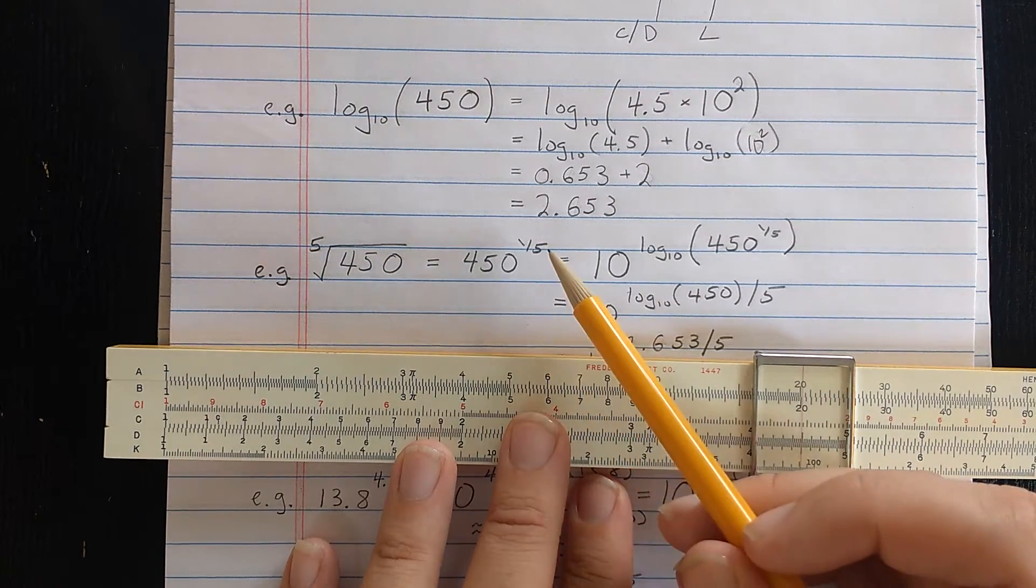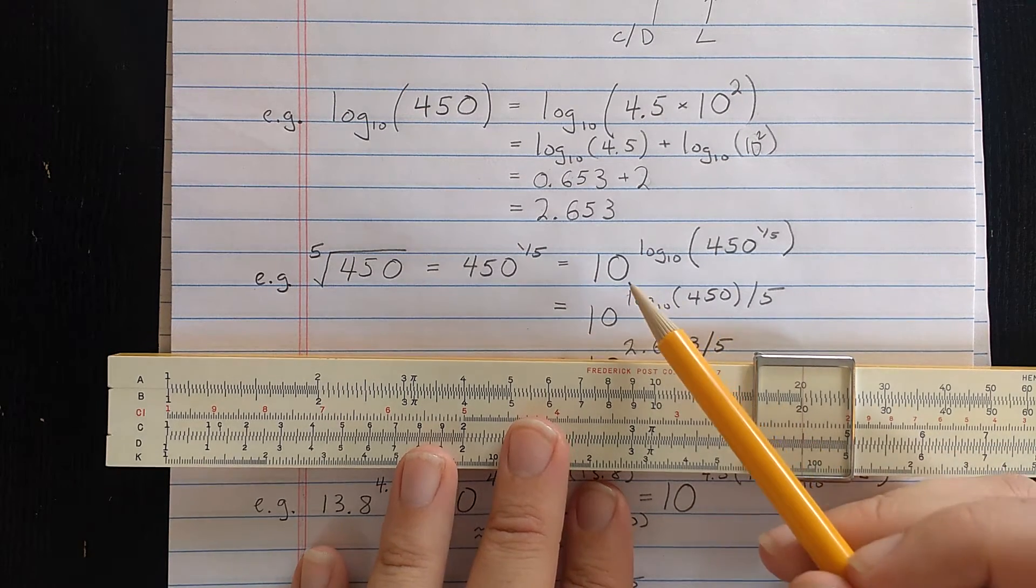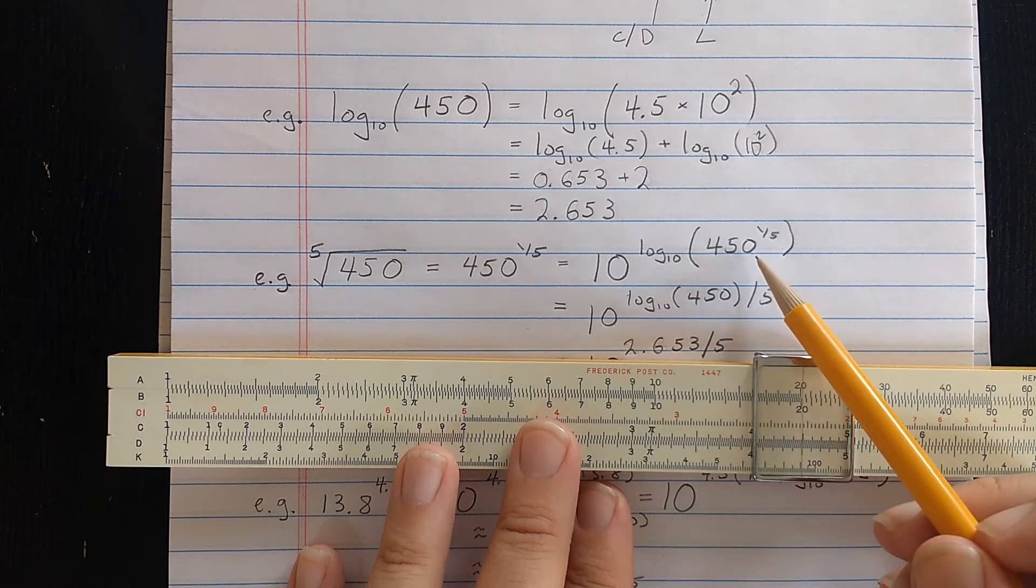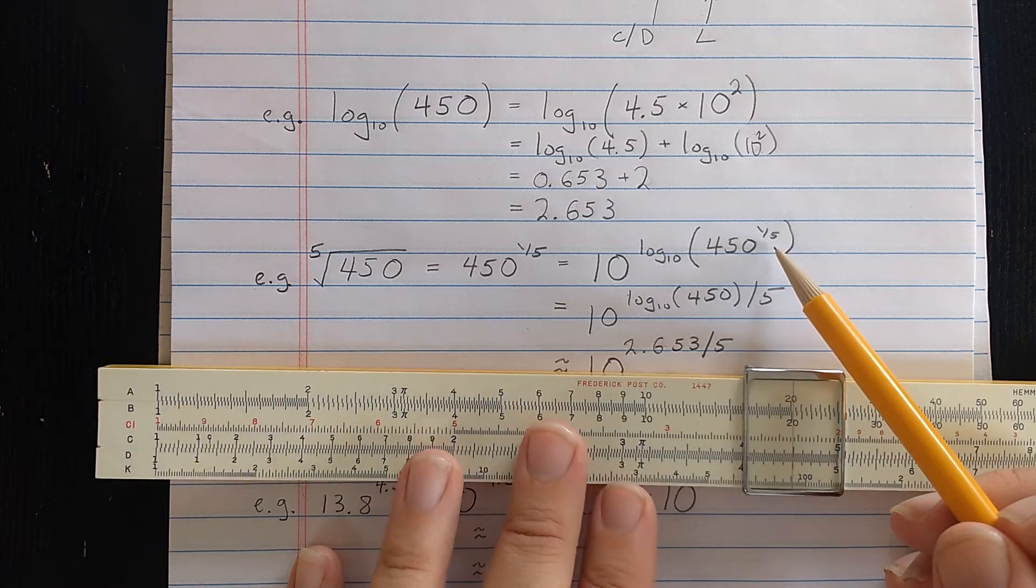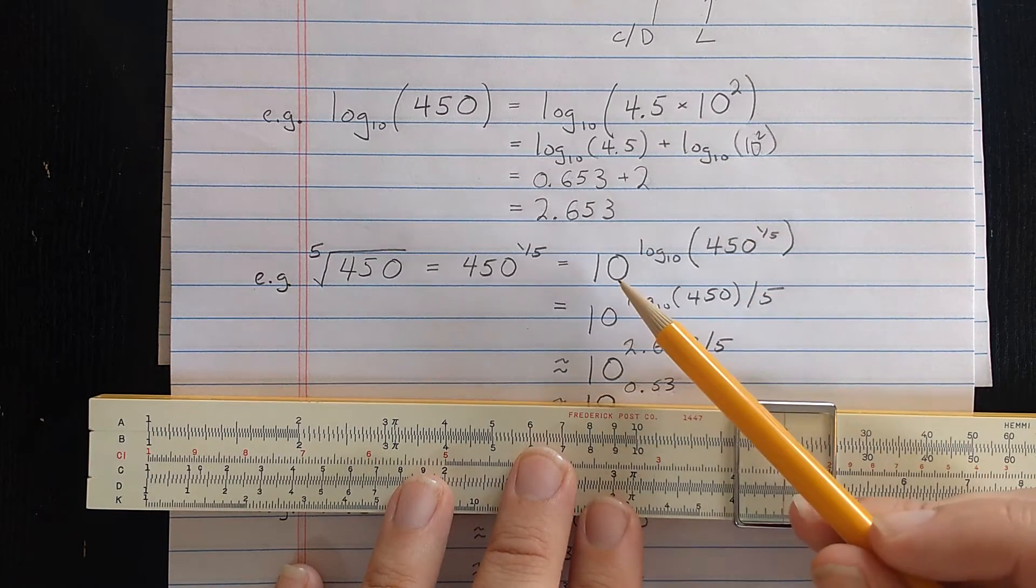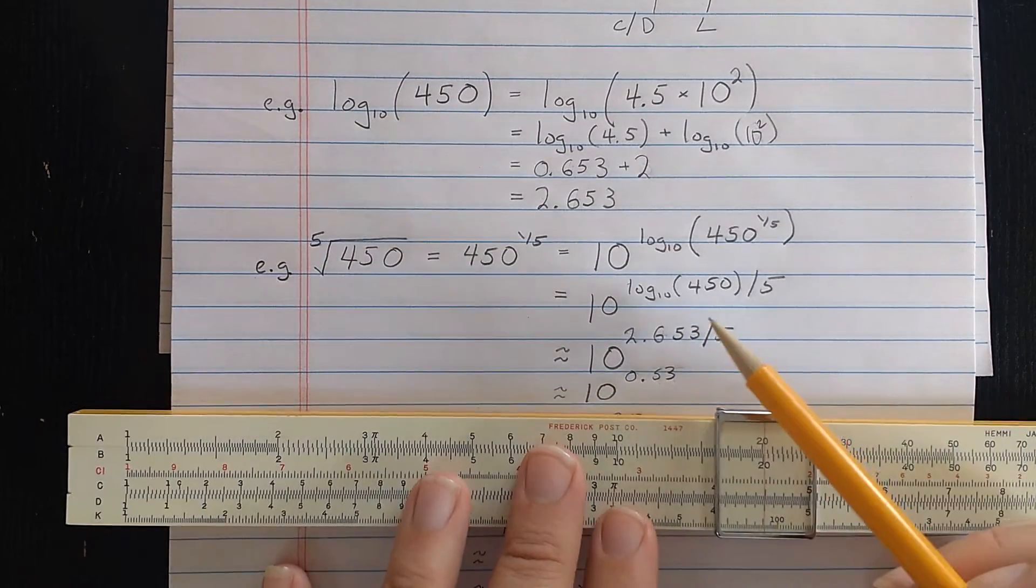Well, that's 450 to the one-fifth power. Using inverse functions, that's 10 to the log with base 10. Those are inverse functions of the same number, 450 to the one-fifth power. So what's going to happen is I'm going to take the logarithm, do something, and then take the exponential at the end using the L scale for both.